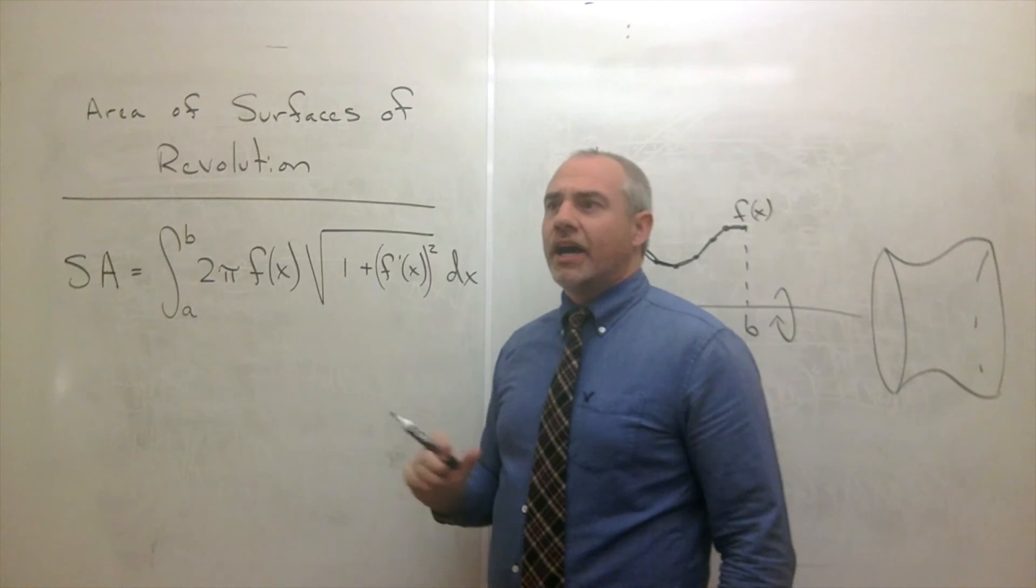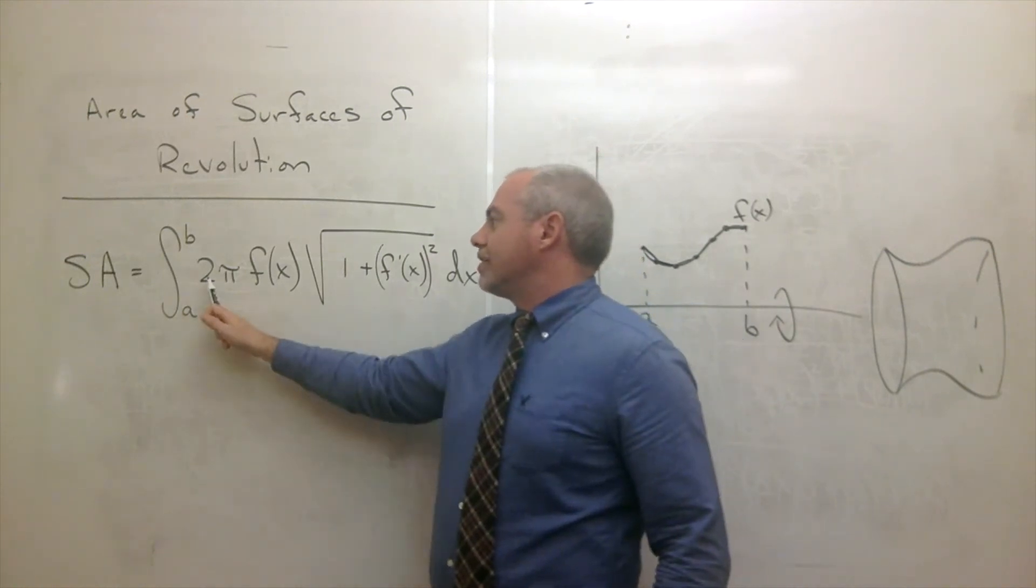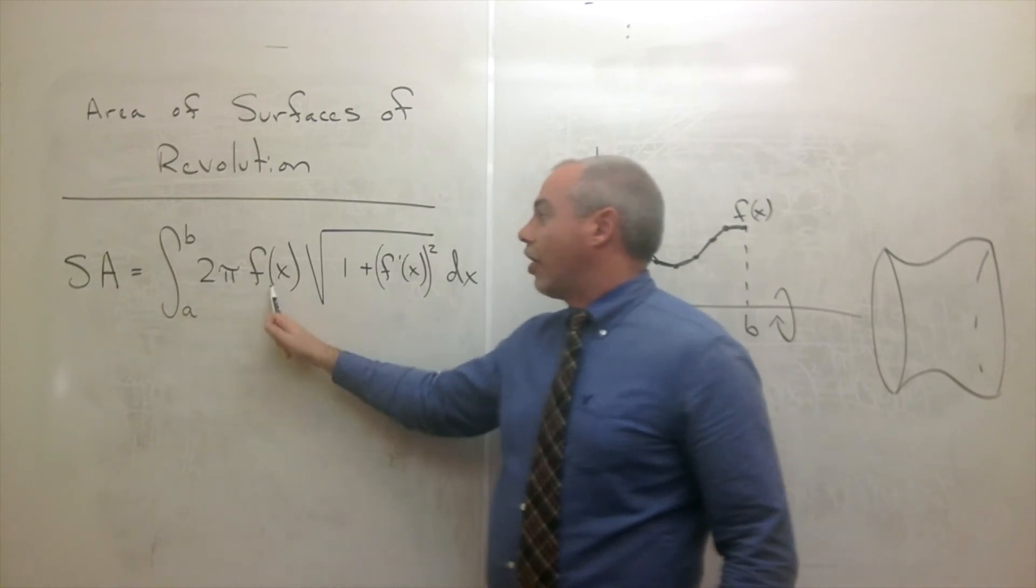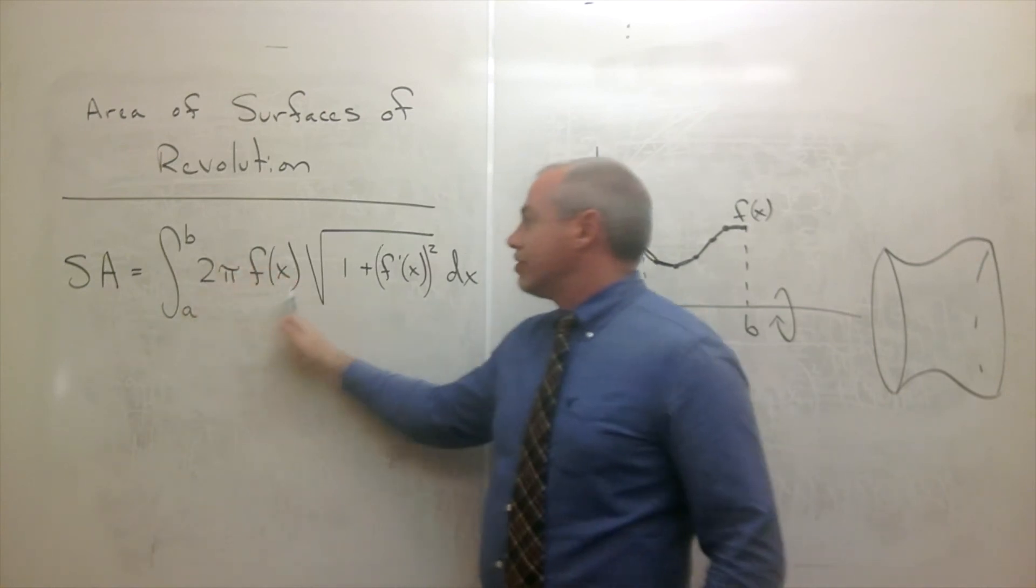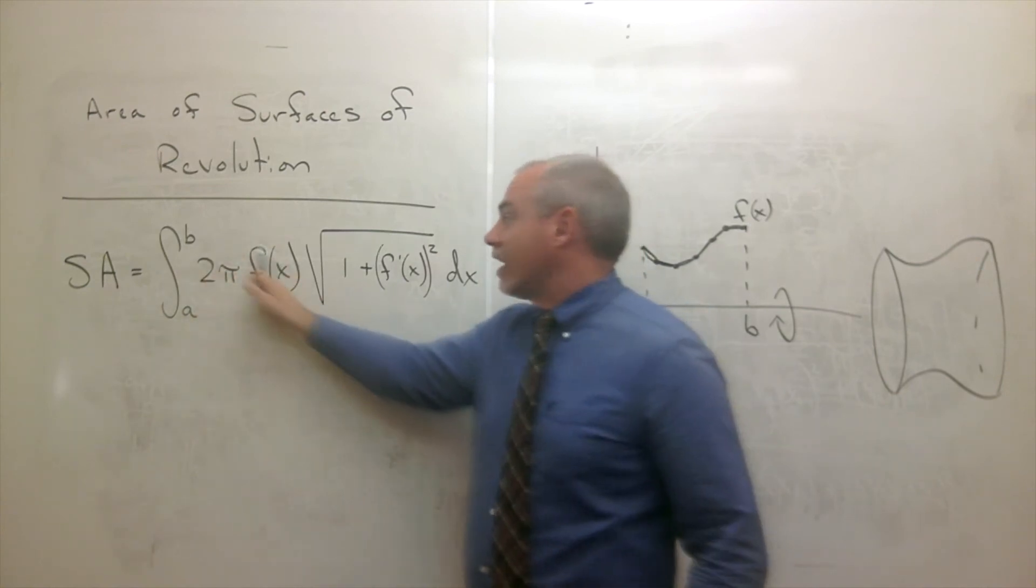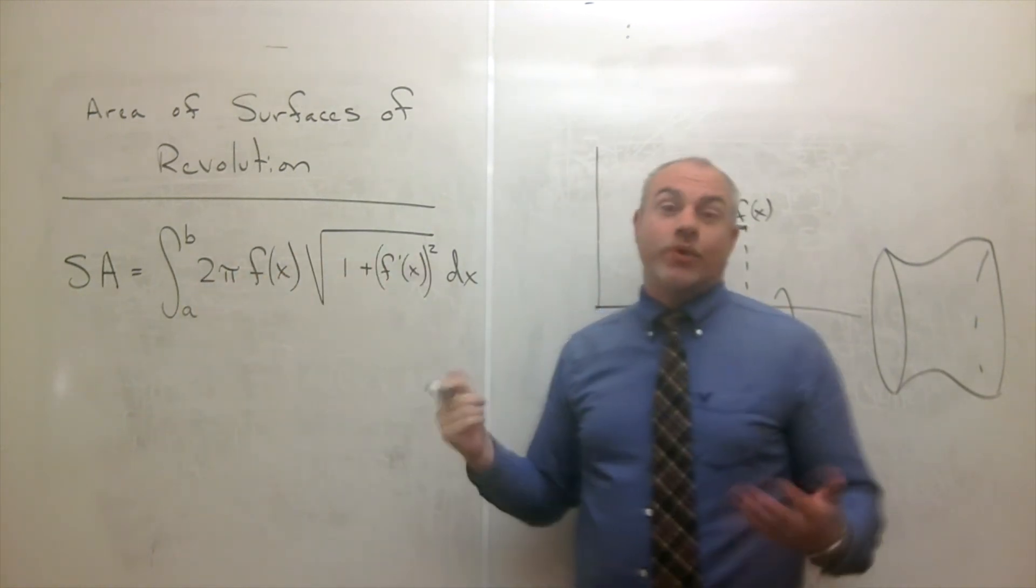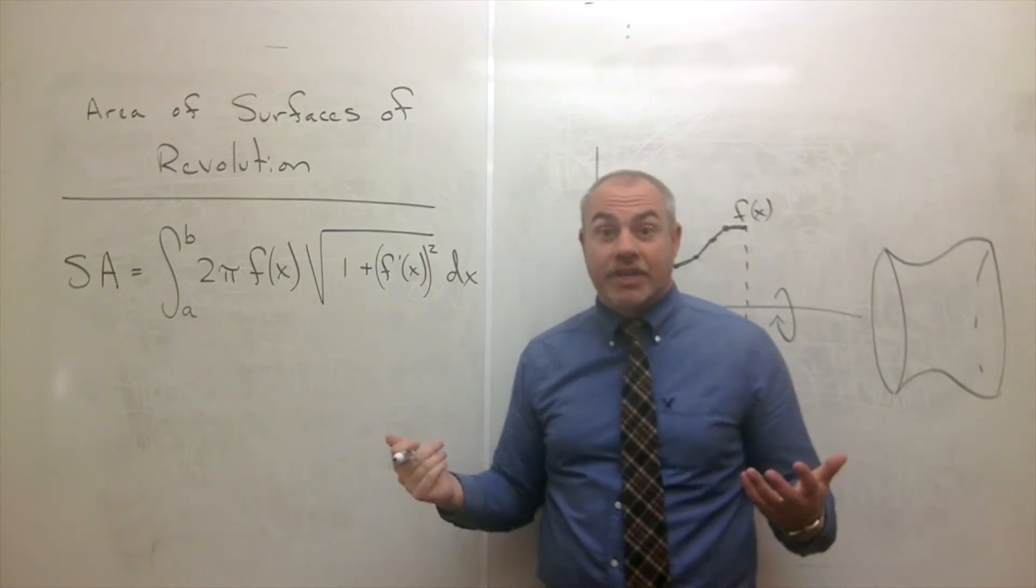Okay. And it's interesting because what is 2π f of x? This is kind of like a 2π r, which is a circumference. So we've got a circumference times a length, and that's what we call our surface area.